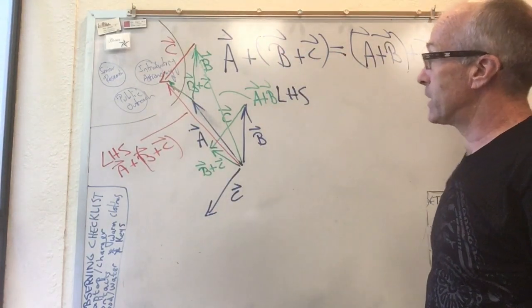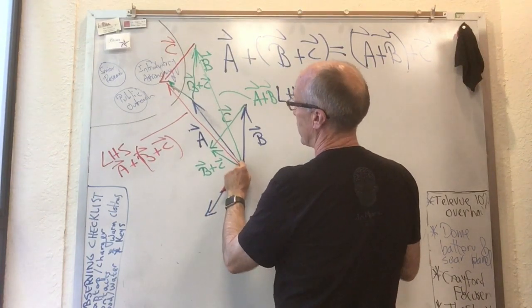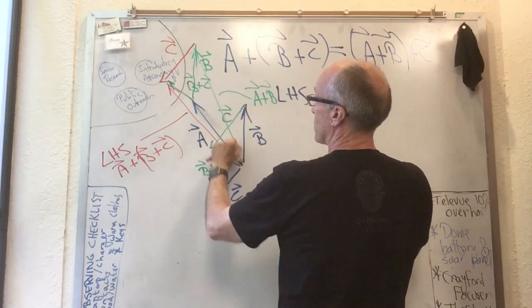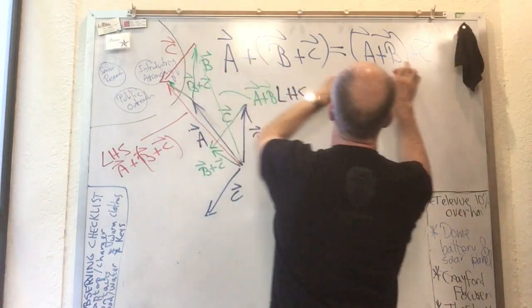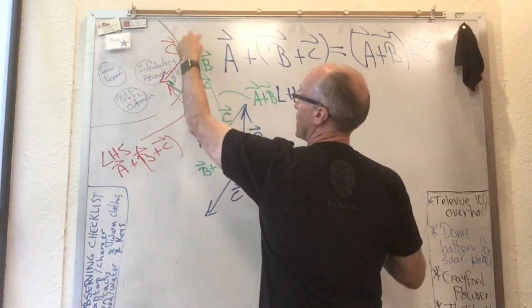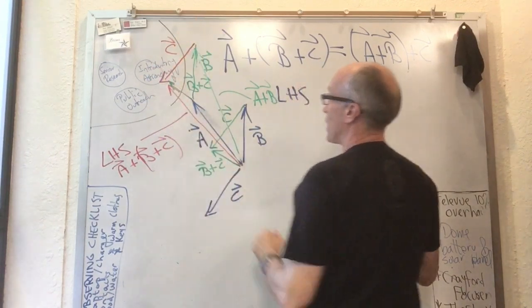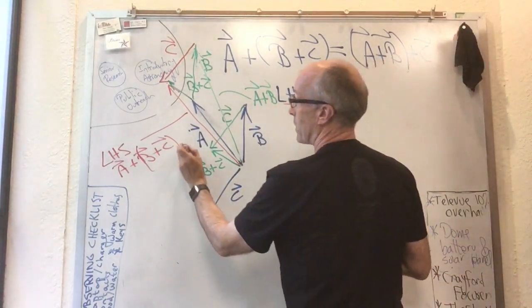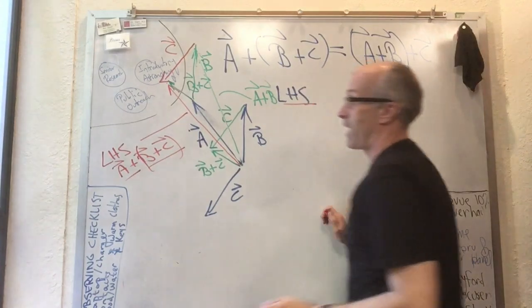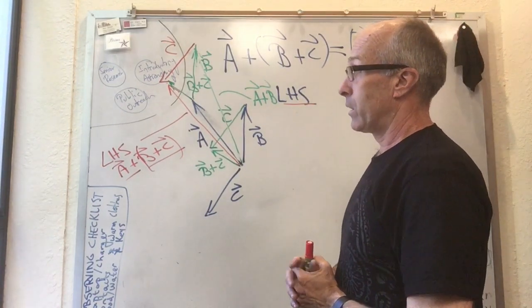What you can see now is that I've taken this copy of c and stuck it on the end of this thing that represented a plus b. A plus b plus c, a plus b plus c, is the same as we got when we calculated the left hand side by first adding b plus c and then adding a. I will see you on Thursday.